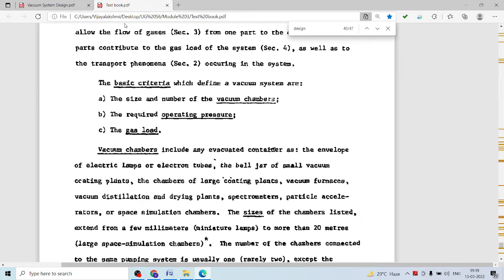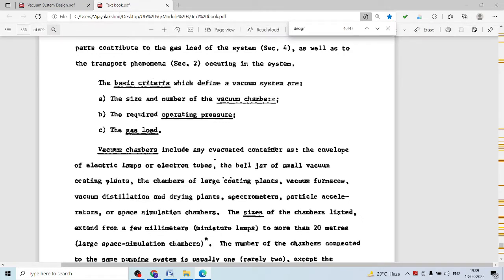This textbook explains one of the basic criteria which defines a vacuum system. These are the size and the number of the vacuum chambers, the required operating pressure, and the gas load.